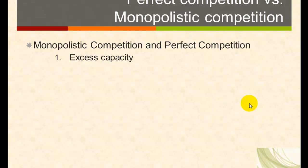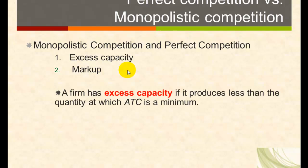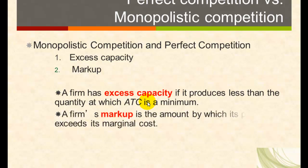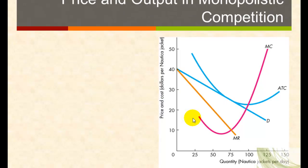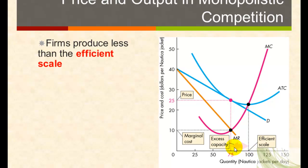Let's discuss two terms: excess capacity and markup. A firm has excess capacity if it produces less than the efficient scale of production, which is the quantity at which average total cost is minimized. Markup is the difference between price and marginal cost — the amount by which price exceeds marginal cost. Looking at a firm in a monopolistically competitive industry, the excess capacity is the difference between how much they produce and what the efficient scale of production is.